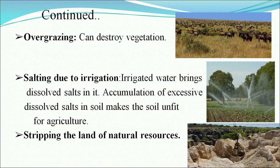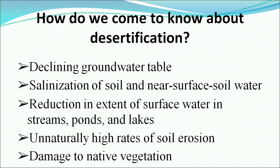Salting due to irrigation is another factor — irrigated water brings dissolved salts, and accumulation of excessive dissolved salts in soil makes it unfit for agriculture. Stripping the land of natural resources through excessive mining also damages the soil.